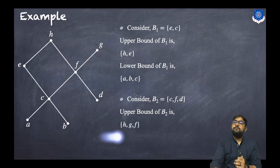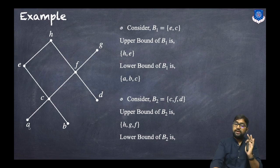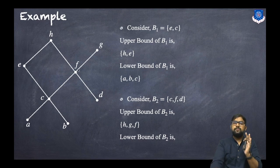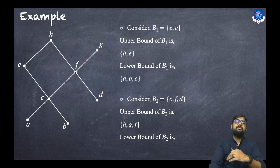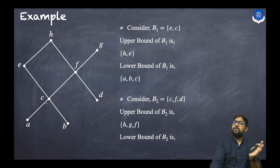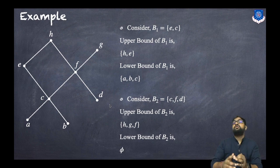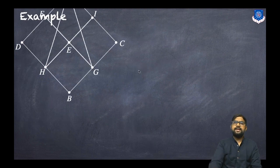For lower bounds of {C, F, D}, there must be a relation from the lower points to all elements of the set. The lower points are A and B. Can we go from A to C? Yes. From A to F? Yes. From A to D? No — going from F to D would require a downward direction. So A is not a lower bound. Similarly, we cannot go from B to D, so B is not a lower bound either. Considering set elements C, F, and D — none can reach all others. So the lower bound set is empty — this set has no lower bound.